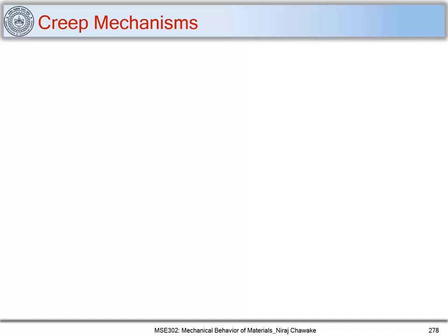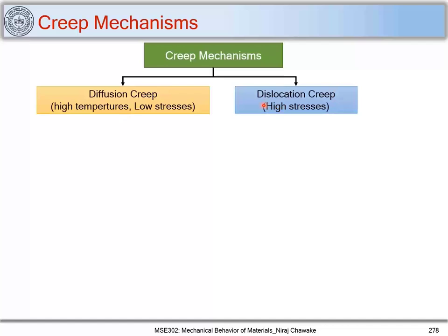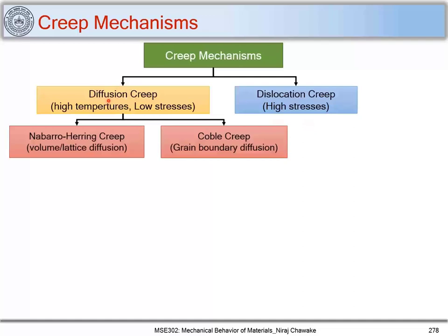Now let's look at the different creep mechanisms and how this relation is applicable. We have divided creep mechanisms into diffusion creep and dislocation creep. Diffusion creep occurs at high temperatures and low stresses — as temperature increases, diffusion dominates. Dislocation creep mechanisms occur at higher stresses, where dislocation activity dominates. In diffusion creep, we divide it into two forms based on the diffusion pathway: Nabarro-Herring creep, where diffusion occurs through the lattice or volume, and Coble creep, where diffusion occurs through grain boundaries.